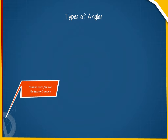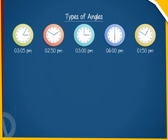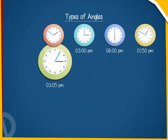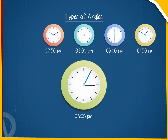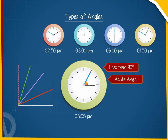Types of Angles. Here are pictures of a clock showing different timings during the day. At 3:05 o'clock, the arms make an angle less than 90 degrees. That means it is an acute angle. We define an acute angle as an angle measuring between 0 and 90 degrees.